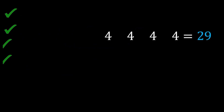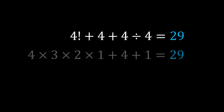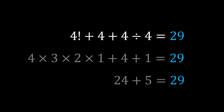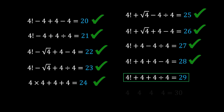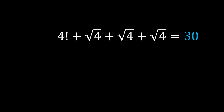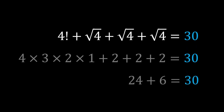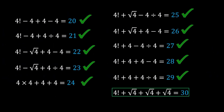Number 29: 4! + 4 + 4 ÷ 4 = 24 + 5 = 29. And finally, number 30: 4! + √4 + √4 + √4 + √4 = 24 + 6 = 30. And there we have all numbers from 0 to 30 using only four fours.